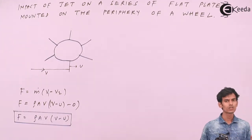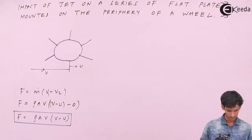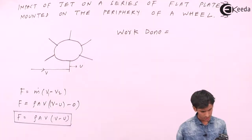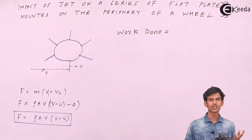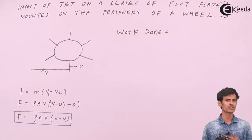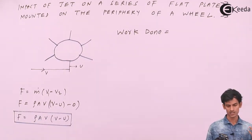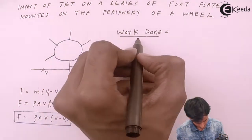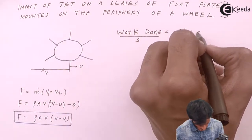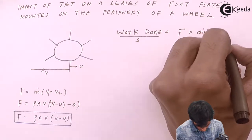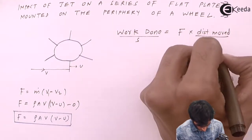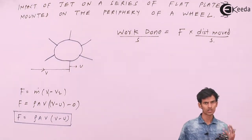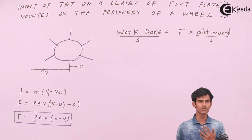Next, let's see what is the work done because of the force. The work done will be the force into the displacement in the direction of the force. So work done per second is force into the distance moved per second. Distance moved per second is the velocity of the plate, u. Therefore, work done per second is force times the velocity of the plate.